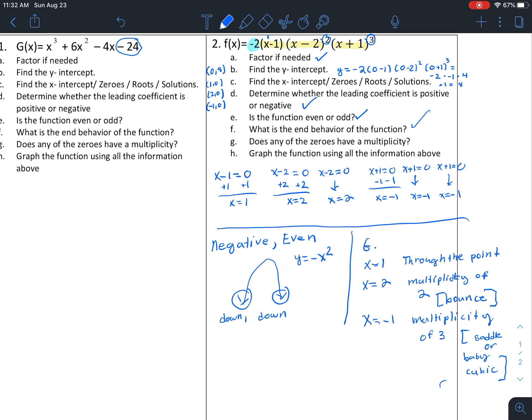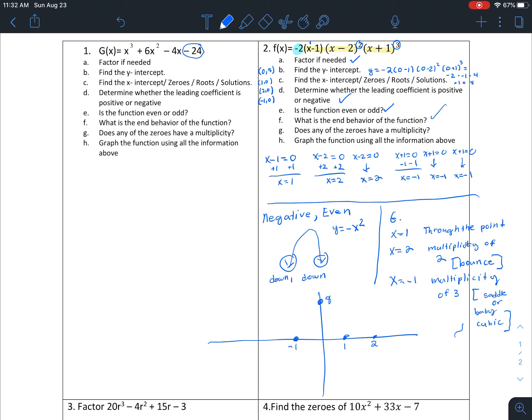So now this is the fun part where we get to graph. And I start by labeling everything. So my y-intercept was (0, 8). My x-intercepts are 1, 2, negative 1. So remember, we start on the left side and we start on the bottom. So I'm going to start here. And negative 1 has a multiplicity of 3.